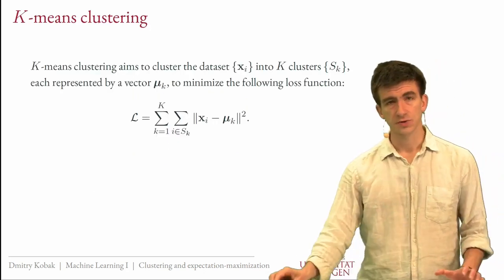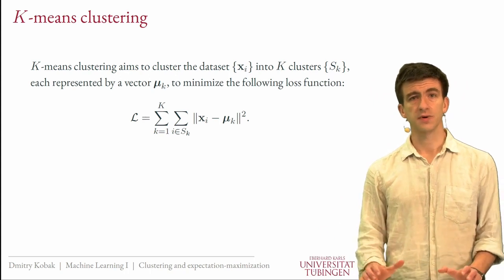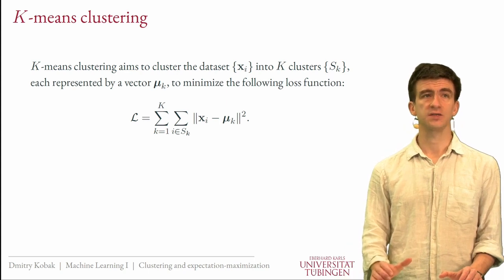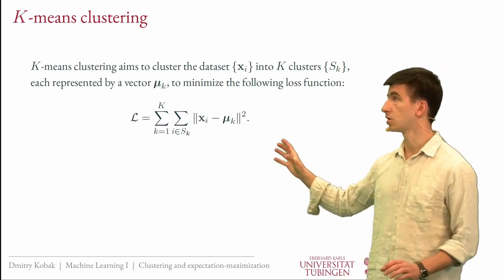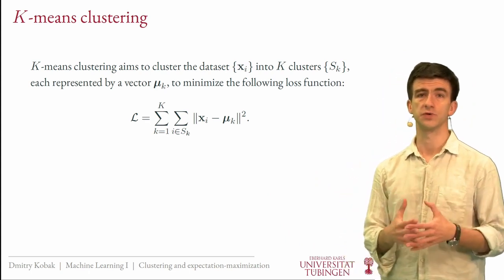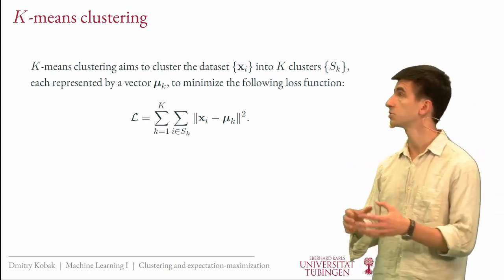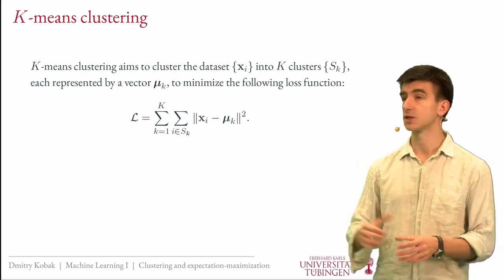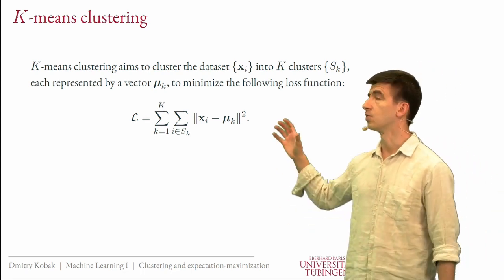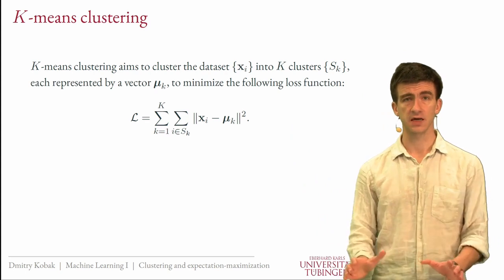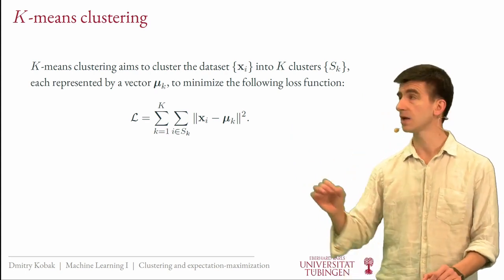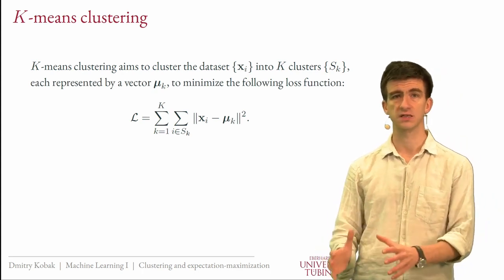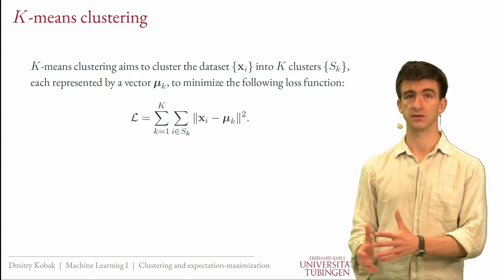We will discuss two particular clustering algorithms: k-means and Gaussian mixture models. In k-means clustering, we define a loss function to formalize the notion of clustering. We have input data xi and we want to split it into k clusters — importantly, in k-means we choose k from the beginning. We represent each cluster by its average, a vector mu, and the loss function is the sum over all clusters and all examples in each cluster of the squared distance from each sample to its representative vector mu.